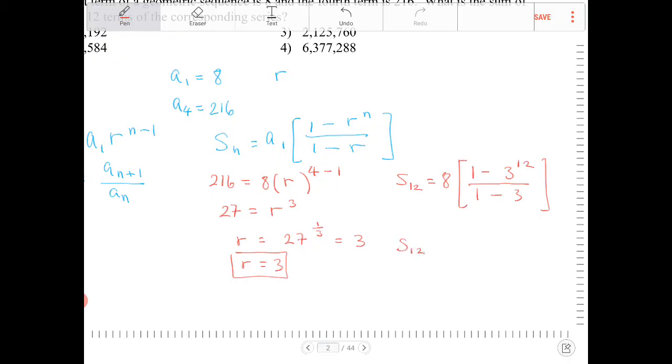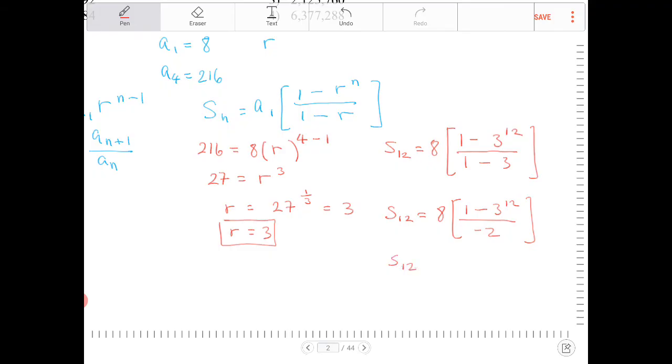S sub 12 is equal to negative 4, times 1 minus 3 to the 12th. So let's enter that into the calculator,